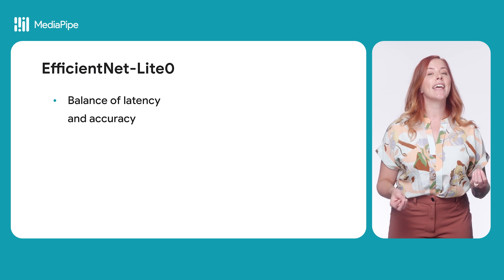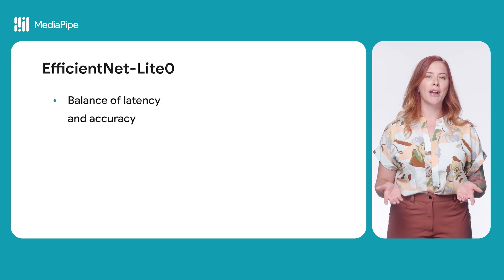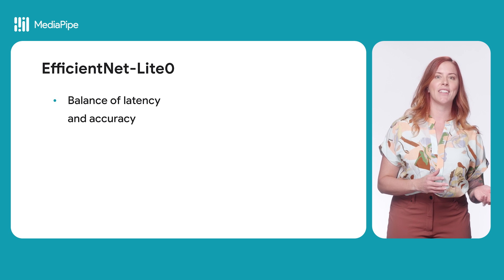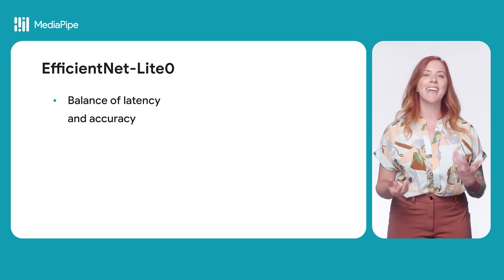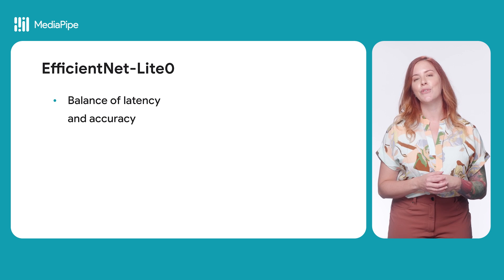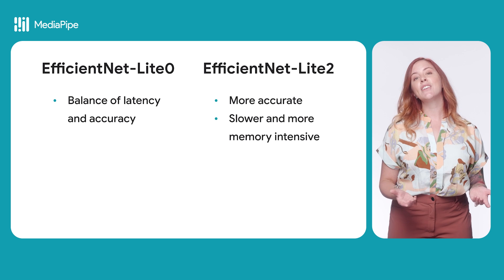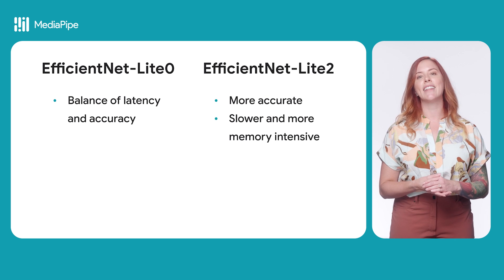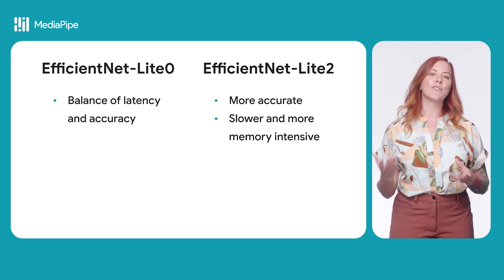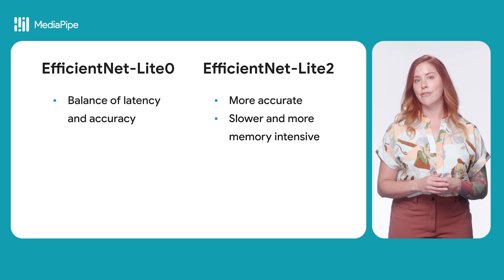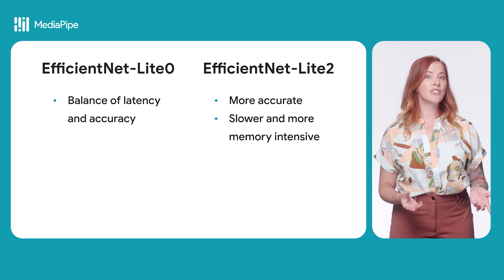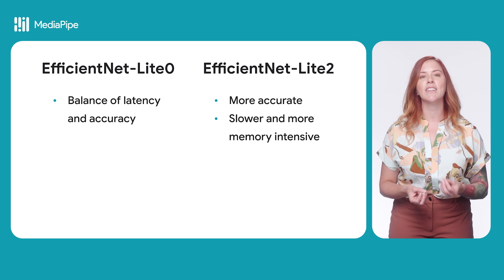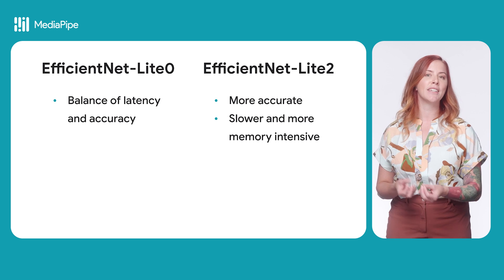The EfficientNet Lite 0 model is recommended because it strikes a balance between latency and accuracy — it is both accurate enough and lightweight enough for most use cases. EfficientNet Lite 2 is generally more accurate, but it's also slower and more memory intensive, so it's appropriate for use cases where accuracy is a higher priority than speed or size.